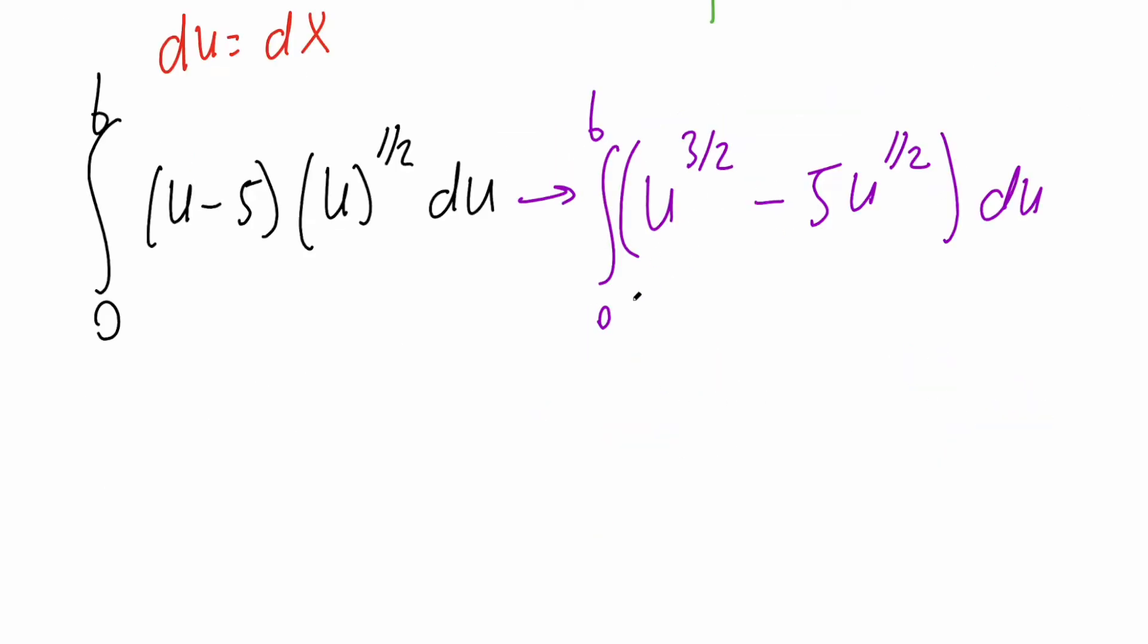We take the integral of this piece. We have u^(3/2+1), so we get 5/2, and we divide by 5/2. Then -5u, we add 1, so 1/2+1 = 3/2, so we divide by 3/2. No plus C because we have a definite integral. It's from 0 to 6.